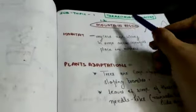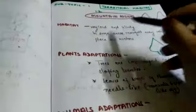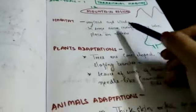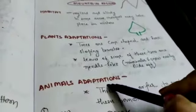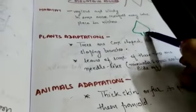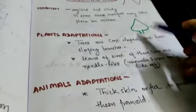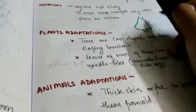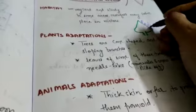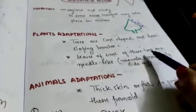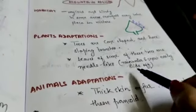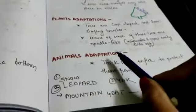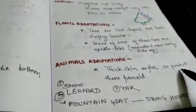Then next we have in the terrestrial section, mountain region. Their habitat is very cold and windy. In some areas snowfall may occur in winter. About plant adaptation, trees are cone shaped with slopey branches. Here if raindrop falls or if there is snow, it directly goes down. Some of the trees have needle-like leaves so rainwater and snow easily slide off.